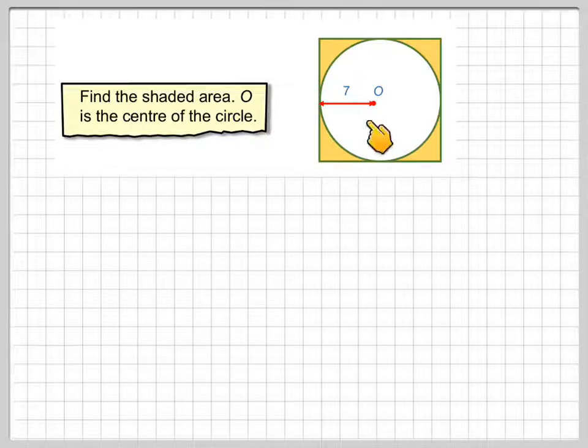So we've got the centre of the circle here and we've got a radius of 7. So this distance here is also 7, which makes this distance 14. This distance is also 7 and this distance is also 7, so this is also 14. So what we've got here is a circle inside a square.